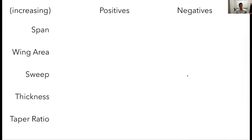To start out with, I'd like us to try to fill out this table. I've got five parameters here: span, wing area, sweep, thickness, and taper ratio. I'd like you to think about each of these effects one at a time. For example, if I increase wingspan only, what are some of the positives or benefits? Similarly, what are some of the negatives or downsides? Take two or three minutes and see how many of these entries you can fill in.